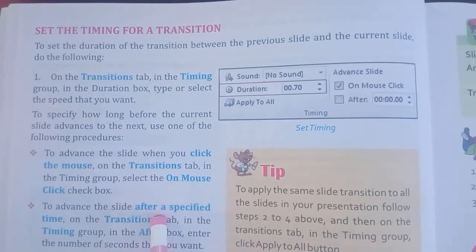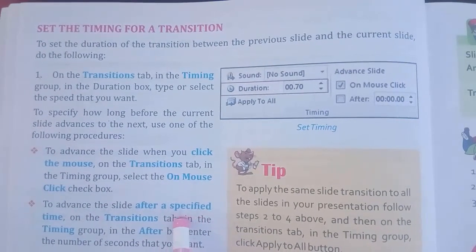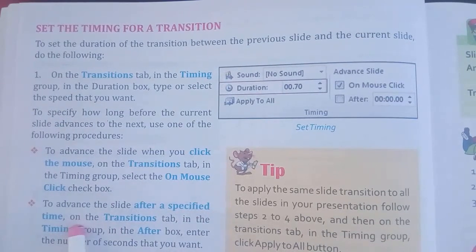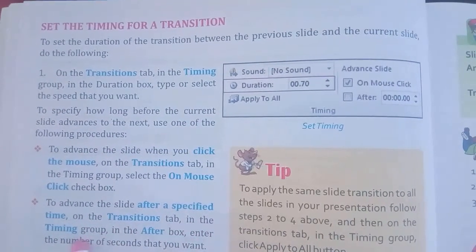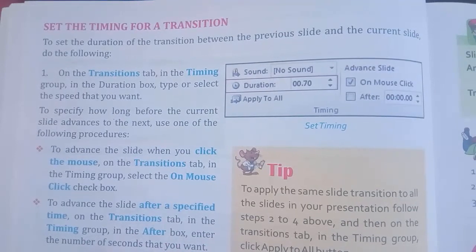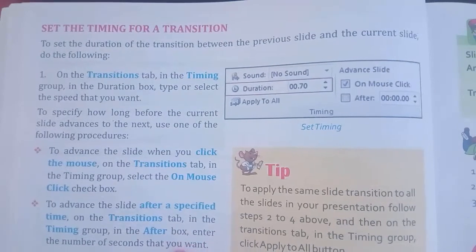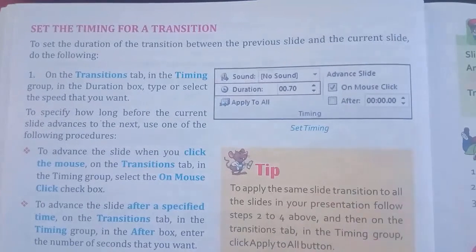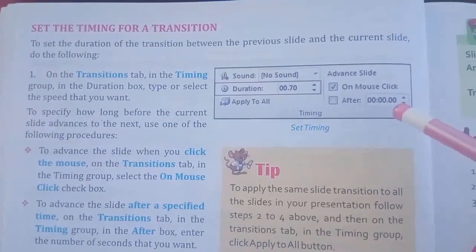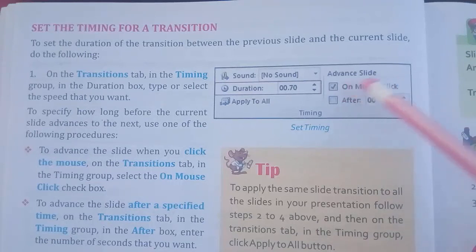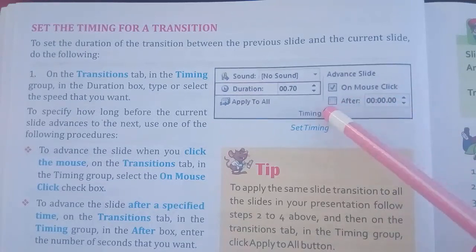To advance the slide after a specified time: on the Transition tab, in the Timing group, in the After box, enter the number of seconds that you want. If you want to set a time instead of using the mouse click, you use the After option to set the time.